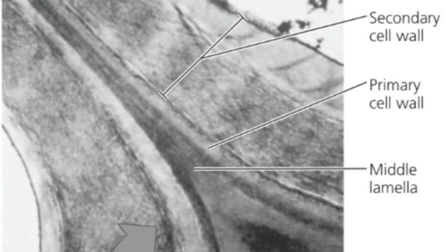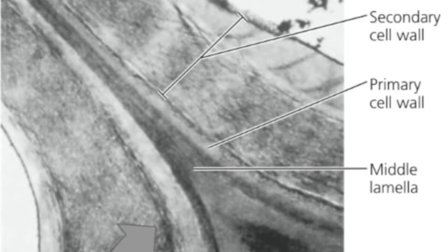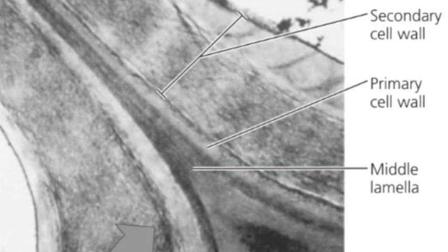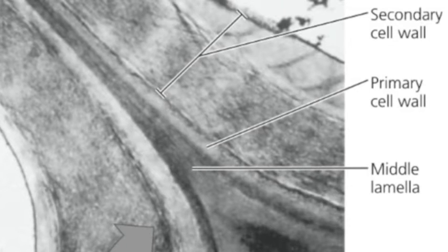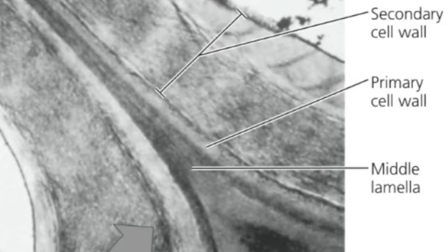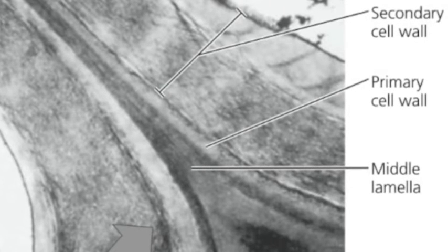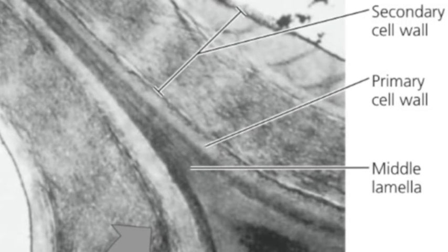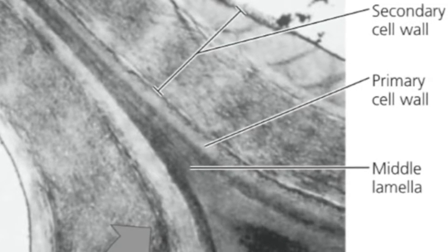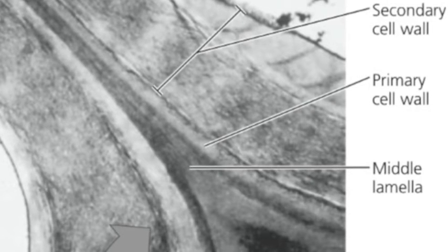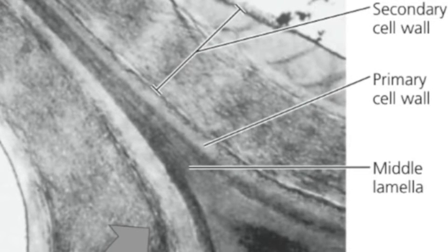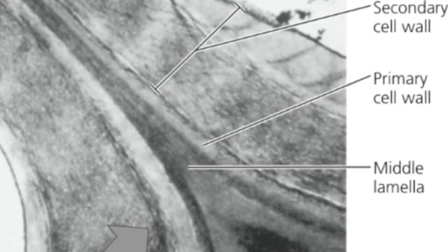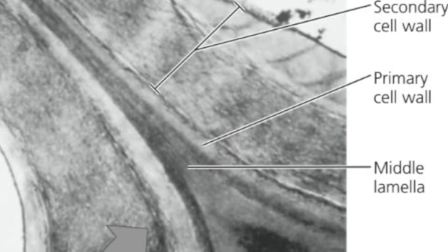Now let's look at a picture of the actual cell wall. As you can see, there are three components to the cell wall: the primary cell wall, which is thin and flexible; the middle lamella, which is a thin layer between the primary walls of adjacent cells; and the secondary cell wall, which is between the plasma membrane and the primary cell wall. There is also something called plasmodesmata, which are channels between adjacent plant cells, not shown in this picture.